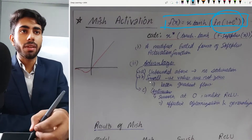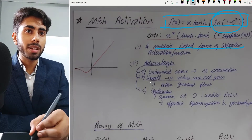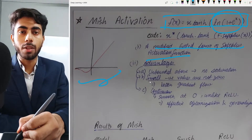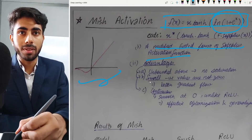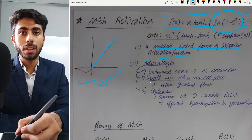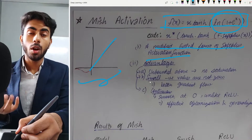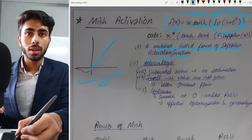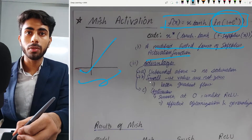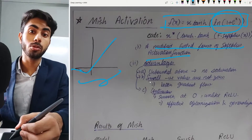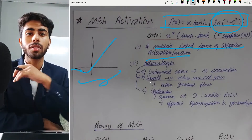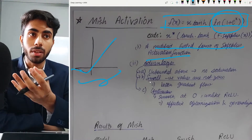If we talk about the graph of mish activation, it looks something like this. For positive values, the graph is a straight line, similar to relu. For negative values, the output will increase negatively, and then for increasingly negative values the graph will decrease and approach zero. These are the properties of mish activation.